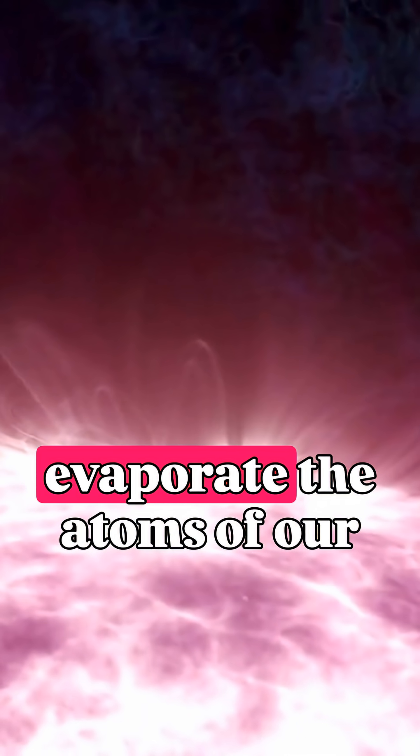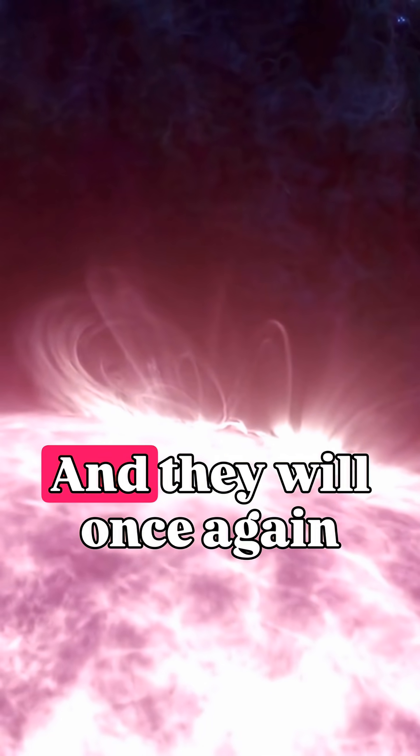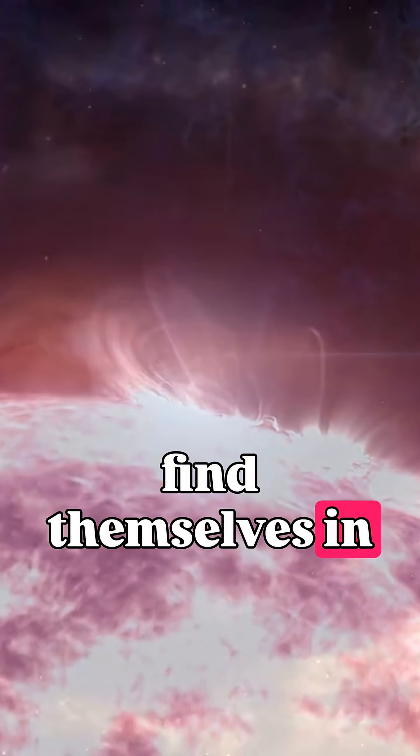When the Sun turns into a red giant, it will evaporate the atoms of our dust from Earth's surface, and they will once again find themselves in outer space.